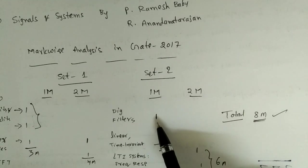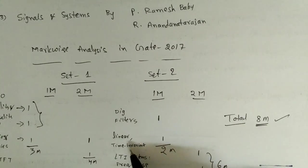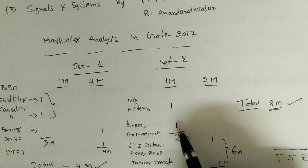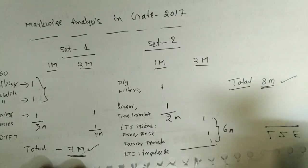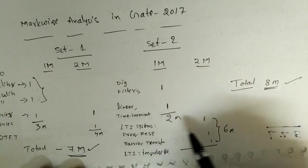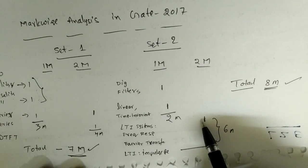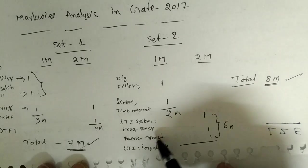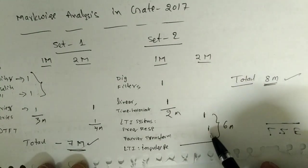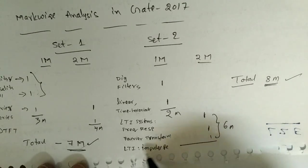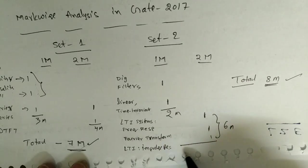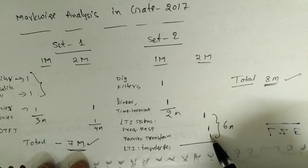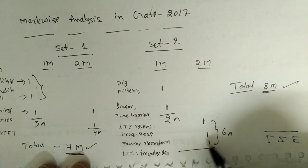In Set 2, one question came from digital filters - find out if it's a low pass filter, band pass filter, or high pass filter. One linear time invariant question with some equation given. Similarly, LTI systems with frequency response given to find the power. One question using Fourier transform technique finding the area. One on impulse response where equations are given and we need to find the area or energy of the output signal.